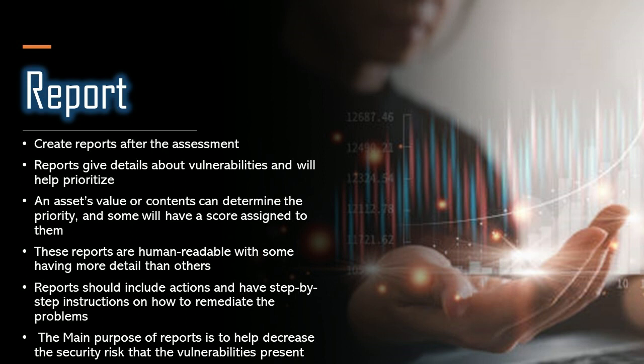Step four is Report. Now that the assessment is done, the next thing to do is to create reports. The reports give details on the vulnerabilities and move into how they will be prioritized. An asset's value or the contents on it may determine its priority, or some places will assign a score to an asset or vulnerability that can signify criticality.